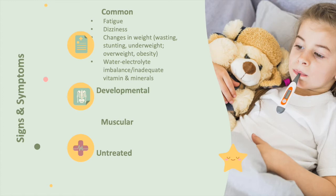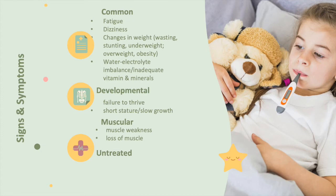There is a water-electrolyte imbalance from inadequate vitamins and minerals. Developmentally, these children present with failure to thrive, short stature, and slow growth. There is muscle weakness with noticeable wasting and loss of muscle. If left untreated, it can lead to physical or mental disabilities.